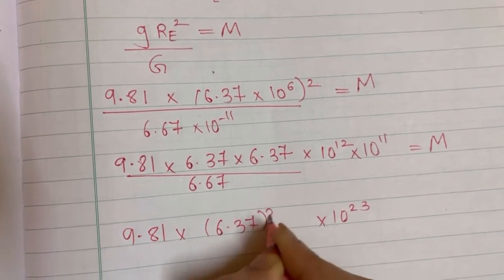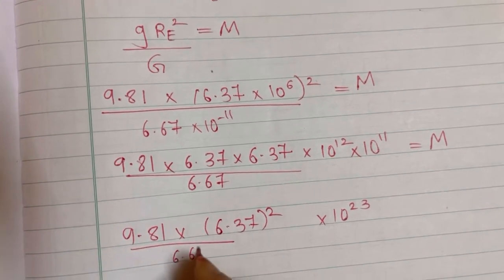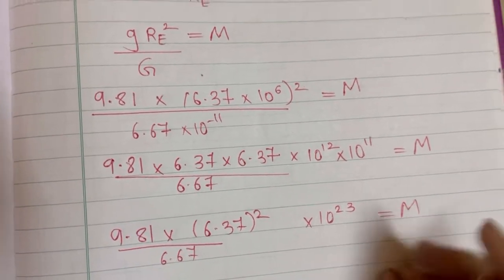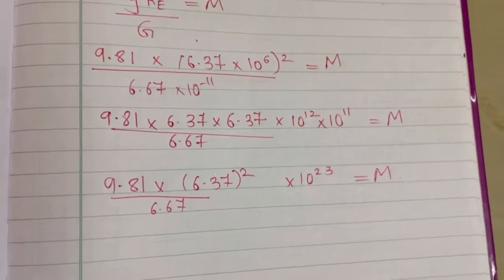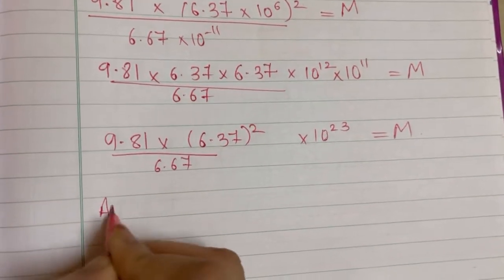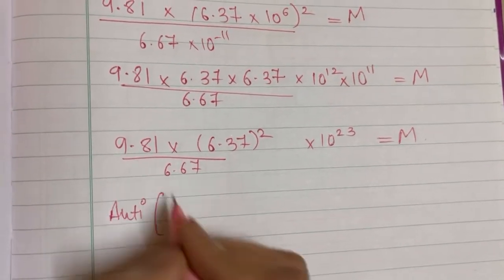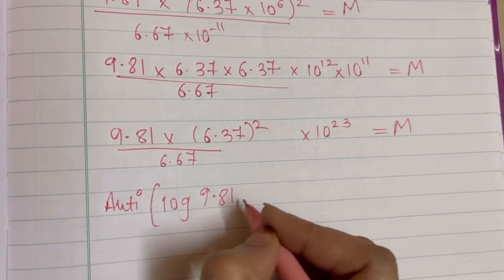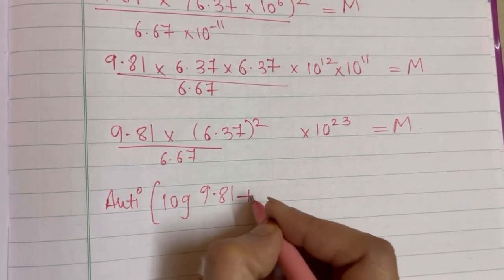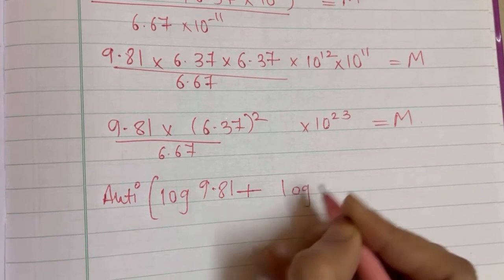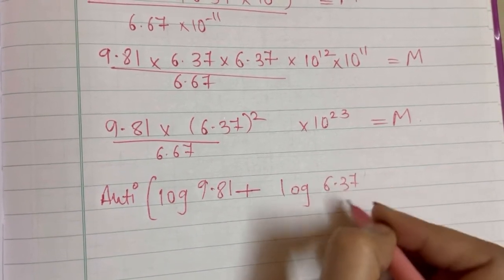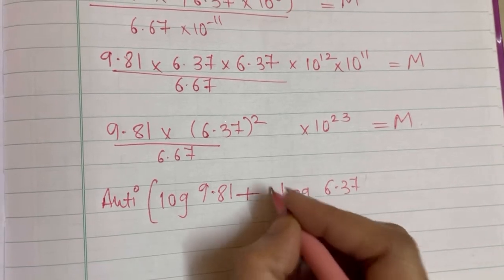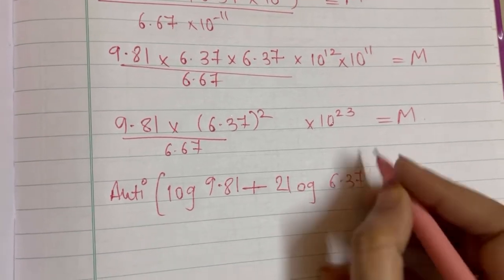Now we will apply log, log and those normal calculations of log, log of 9.81, because of this multiplication we will have addition, then log of 6.37 the whole square and the square will come ahead of log. If it would have been cube, then this cube would have come ahead of log.